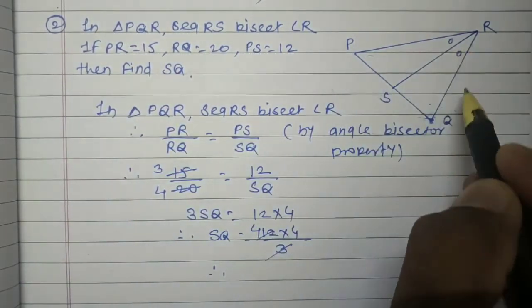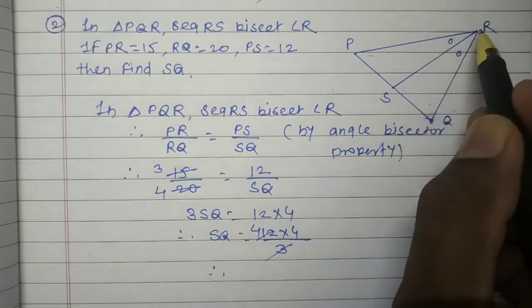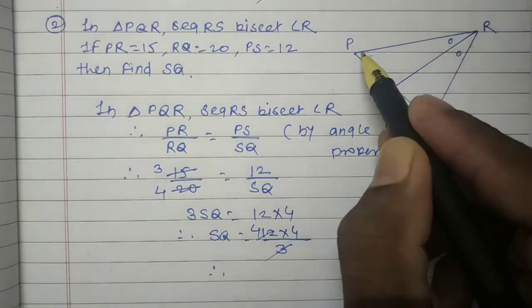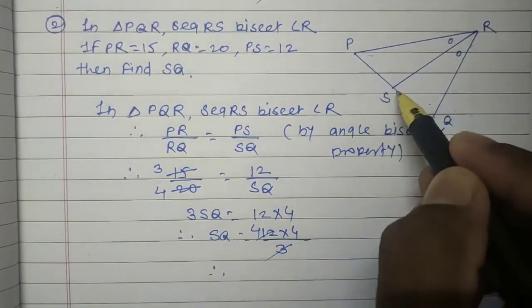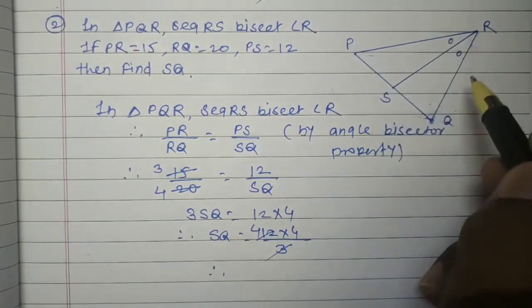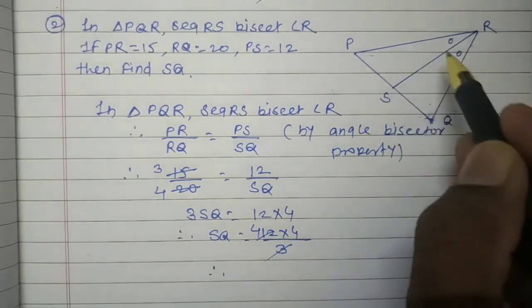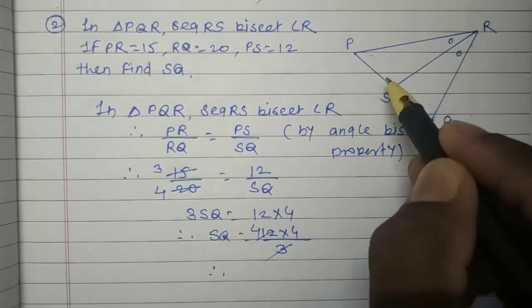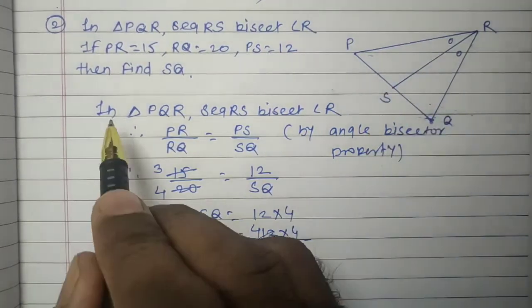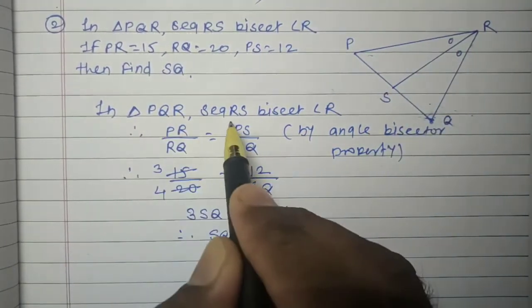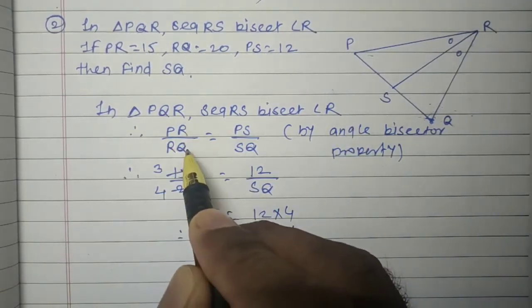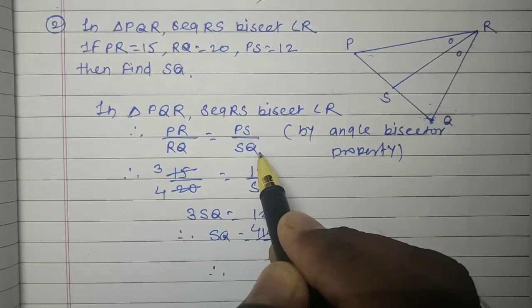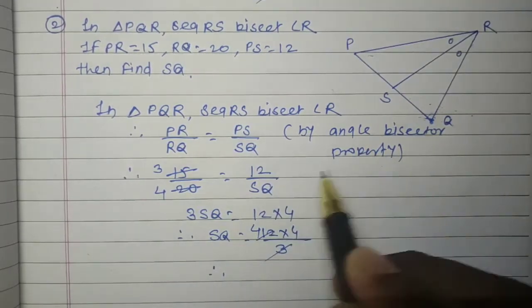In triangle PQR, RS is the bisector. Therefore, the bisector of an angle divides the opposite side. Here are two side ratios: PS and SQ. PS upon SQ equals PR upon RQ. In triangle PQR, segment RS bisects angle R. Therefore, we write PR upon RQ equals PS upon SQ by angle bisector property.